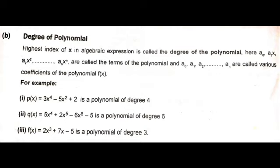Here are a few examples. First: p(x) = 3x⁴ − 5x² + 2 is a polynomial of degree 4, because the highest index of x in this algebraic expression is 4. Second: q(x) = 5x⁴ + 2x⁵ − 6x⁶ − 5 is a polynomial of degree 6, because the highest power of variable x is 6. Third: f(x) = 2x³ + 7x − 5 is also a polynomial of degree 3, as the highest power of the variable x in this expression is 3.